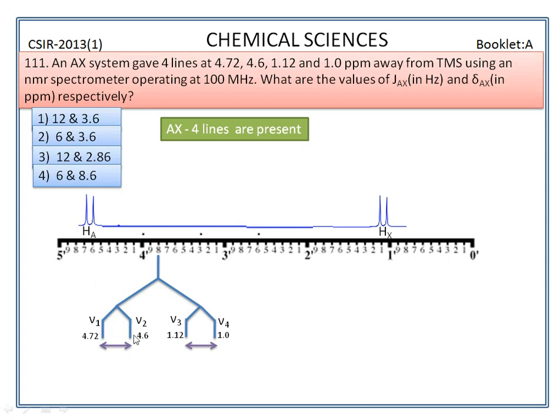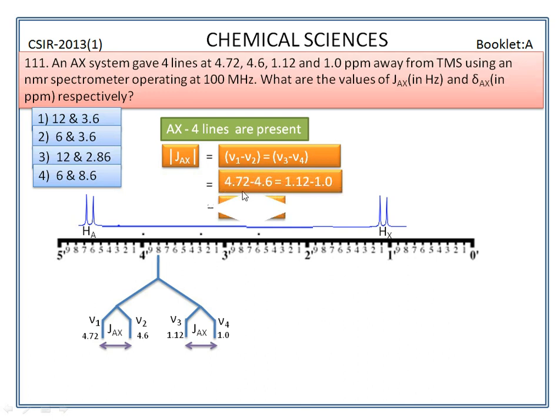The splitting between the lines of the doublet is called coupling constant. The symbol for coupling constant is J. Coupling constant between any two adjacent lines in the NMR peaks of two sets of equivalent nuclei couples only to each other is same. Coupling constant between two nuclei A and X will be JAX. It is calculated by N1 minus N2 equals N3 minus N4. If we substitute these values, we get 0.12 ppm.